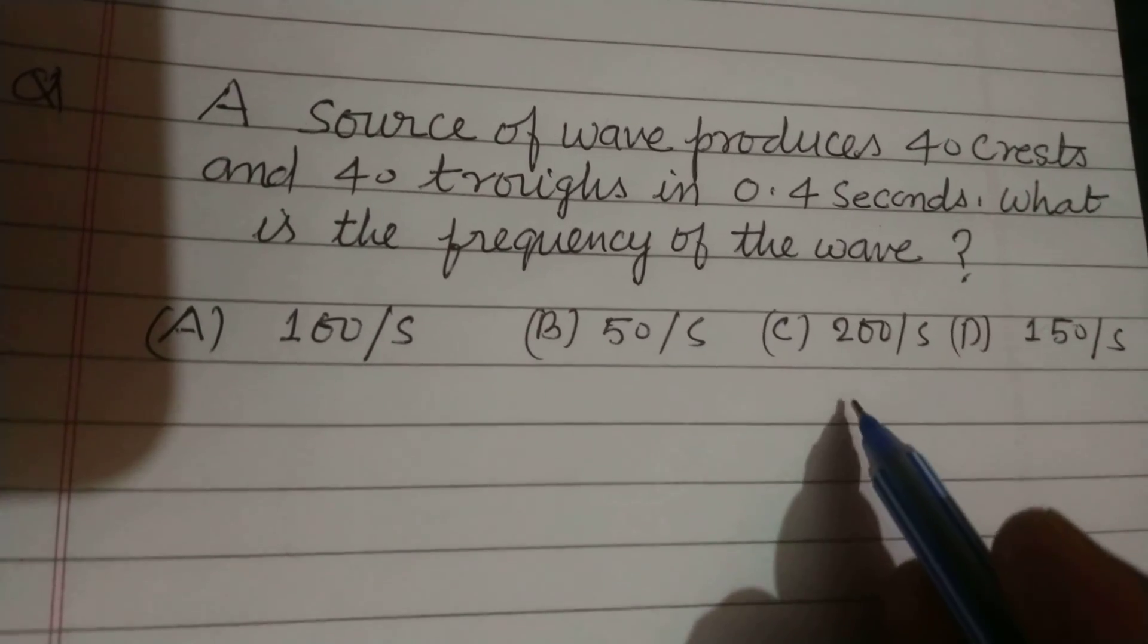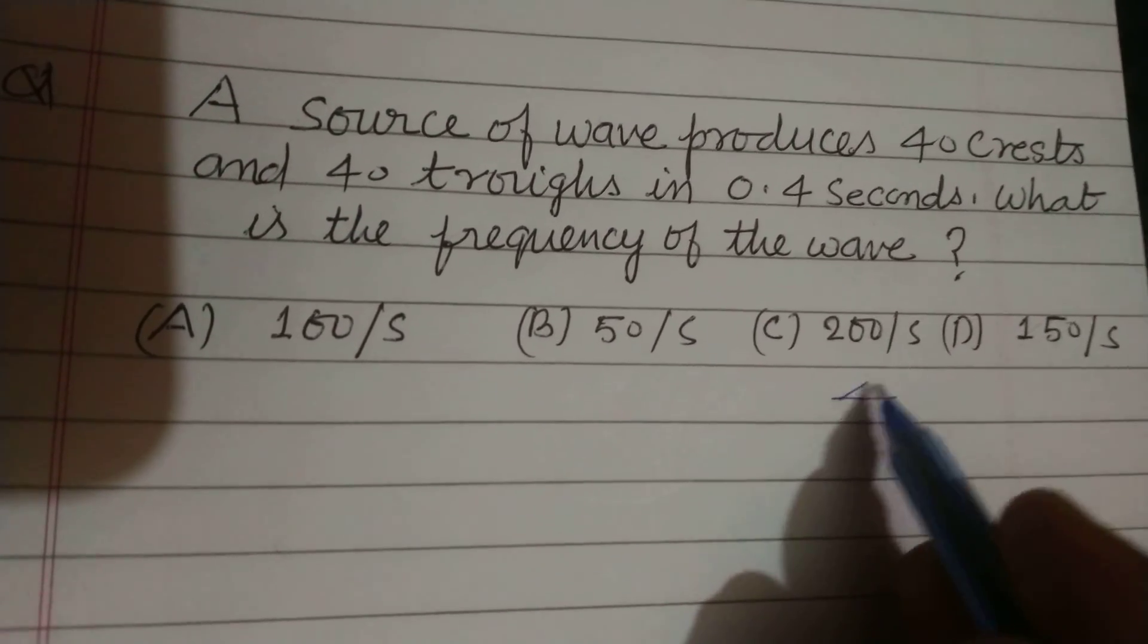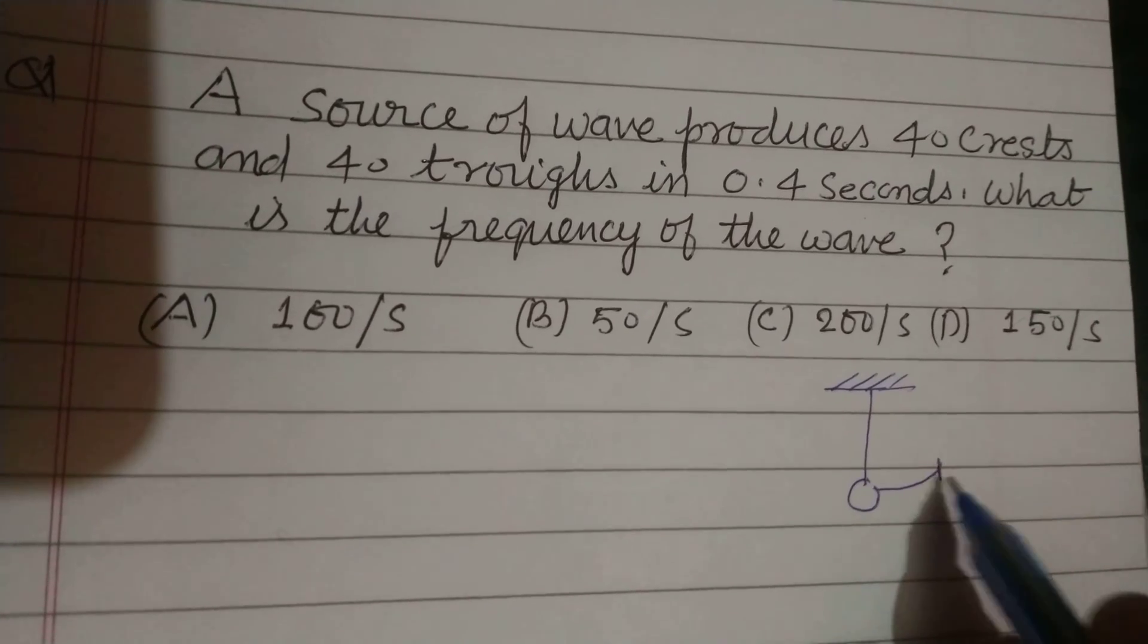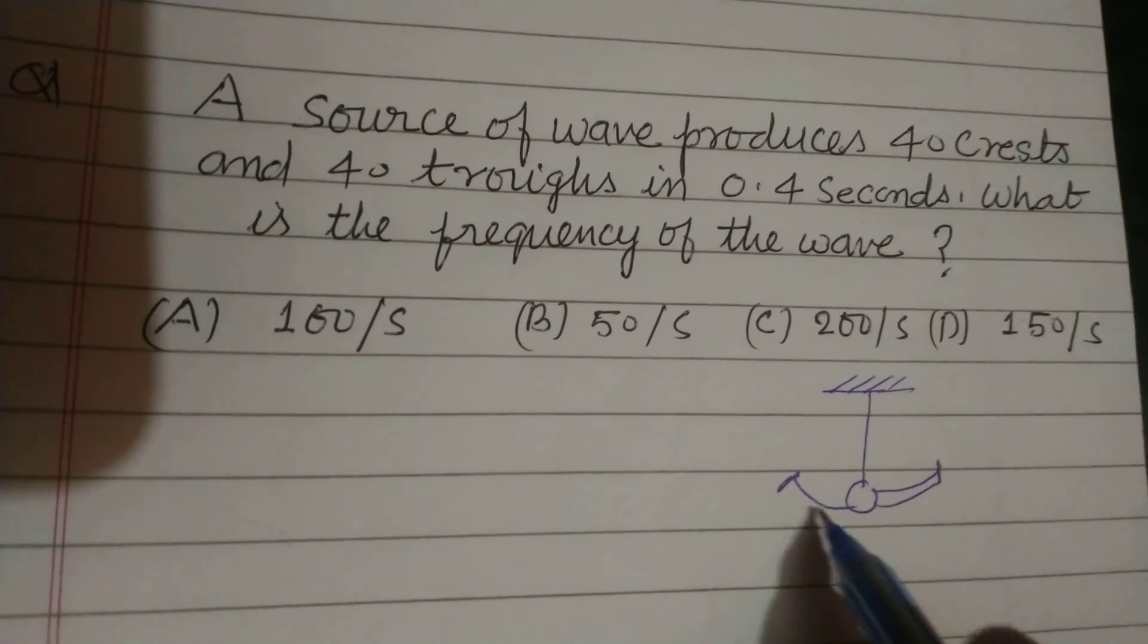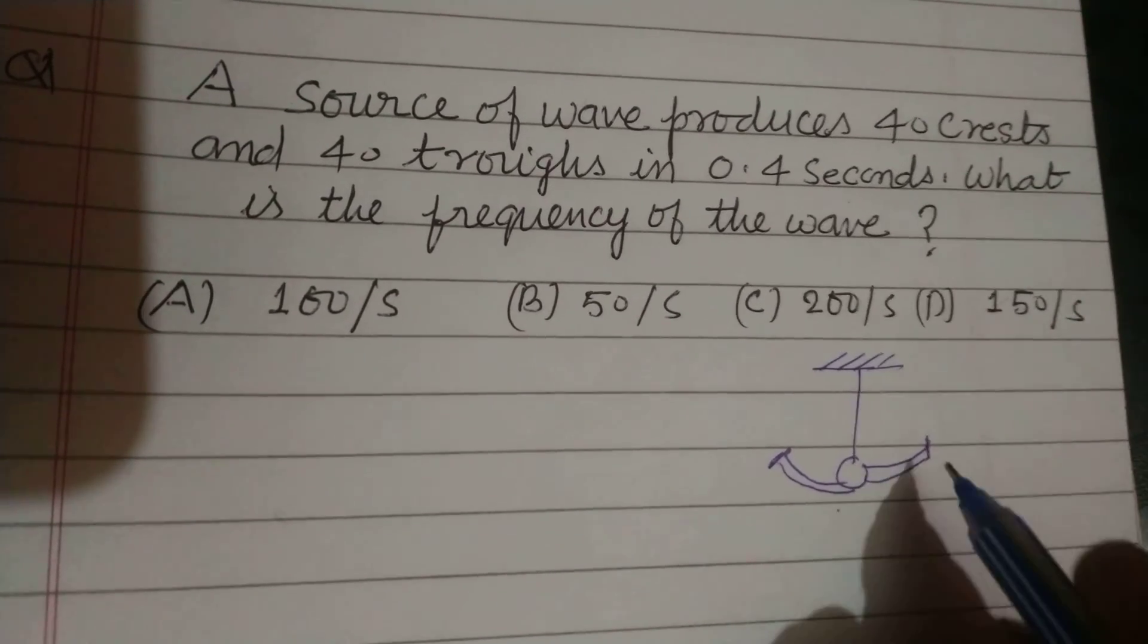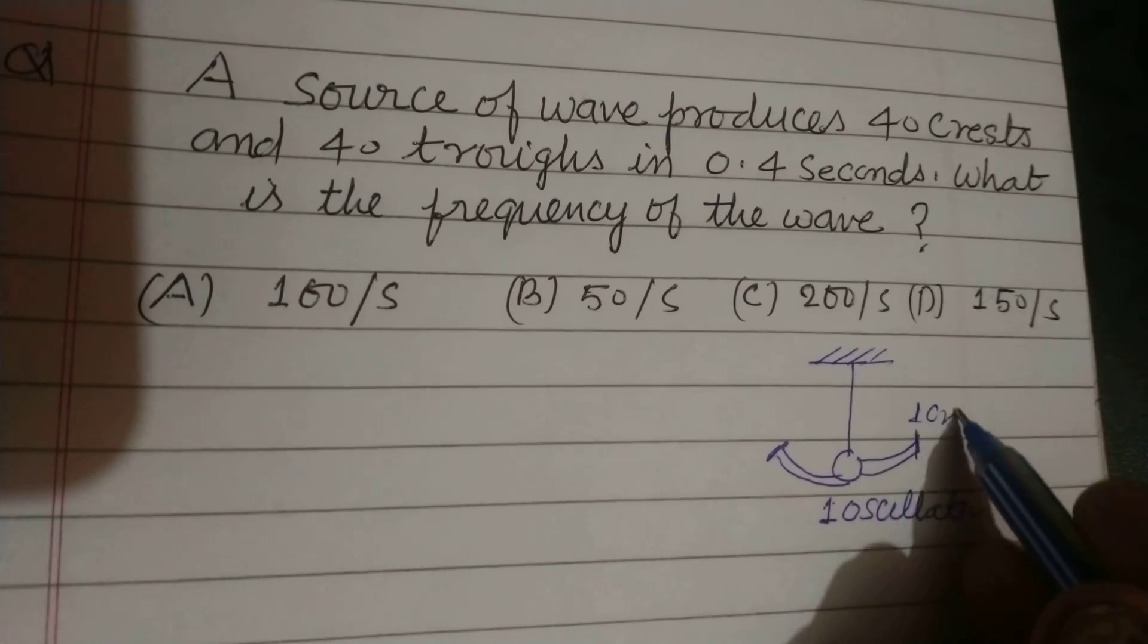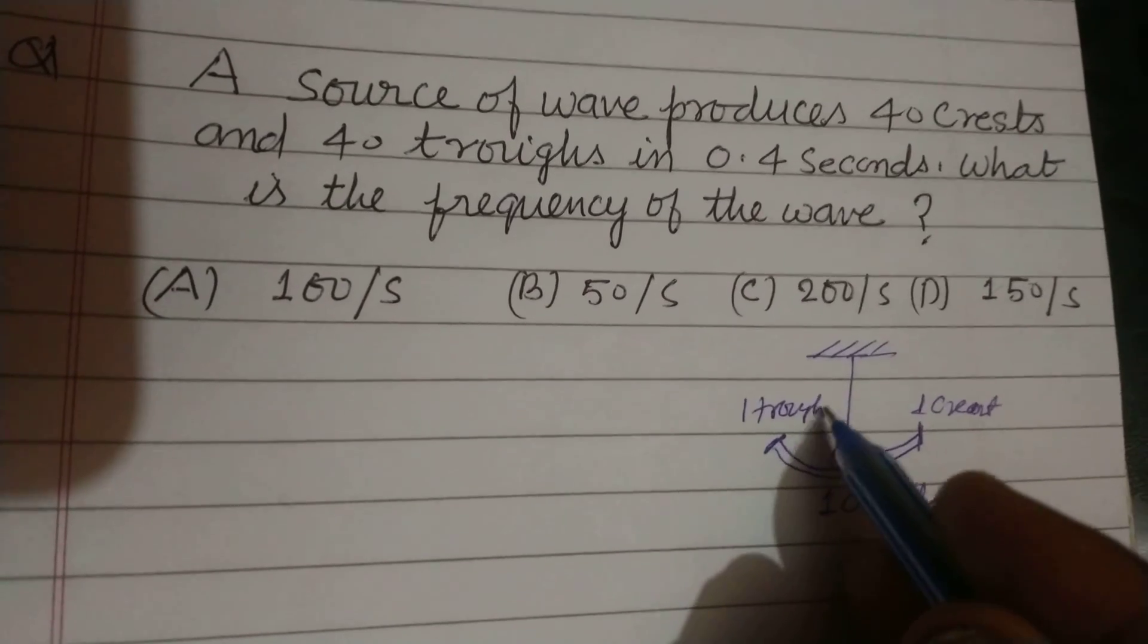So we first discuss about the vibration or one oscillation. We consider a simple pendulum. In one oscillation it covers a crest and comes to mean position again, and it goes to a trough and comes to its mean position. So this is called a vibration or one oscillation. One crest and one trough form in this condition.